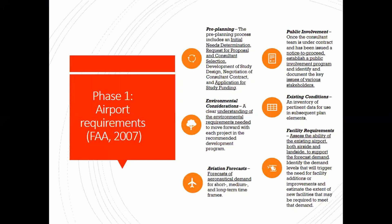For example, if an airport is being built next to a suburb, the public's concerns would revolve around noise, traffic, and similar issues from the airport. You need to involve those stakeholders. Then you assess existing conditions and facility requirements — evaluating the ability of the existing airport on both the air side and land side to support the forecast.